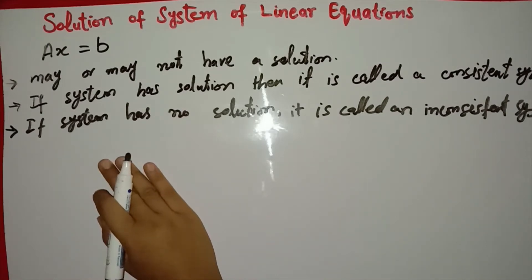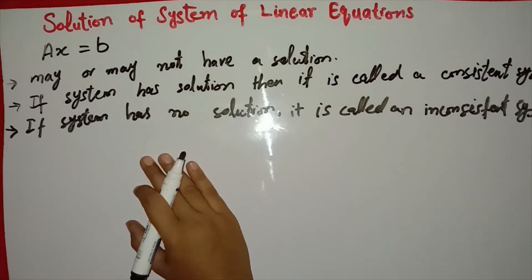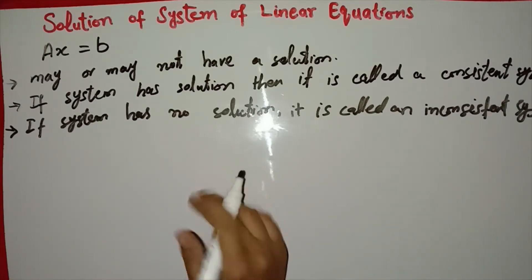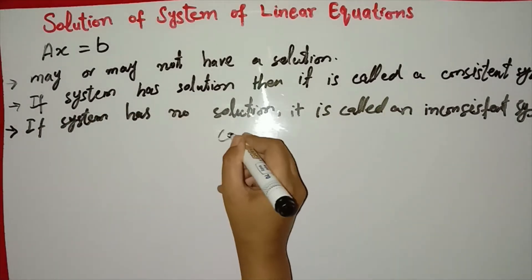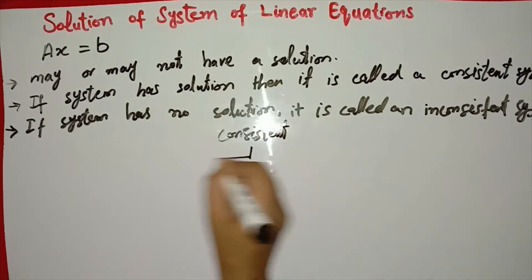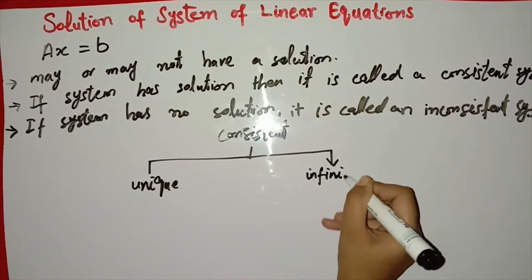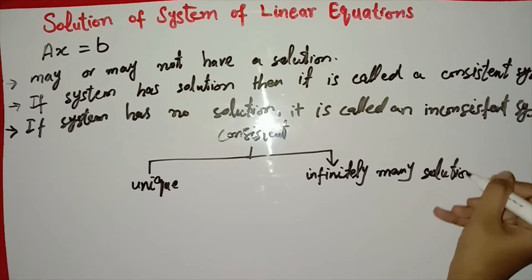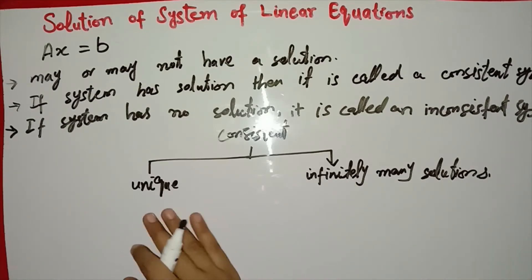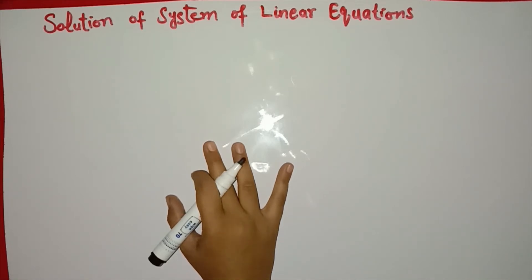If the system is inconsistent, then the question stops. But if the non-homogeneous system is consistent, then there are two cases. Either the solution is unique, or infinitely many solutions exist. We will discuss the non-homogeneous system that is consistent — its solution depends on the type of the system.